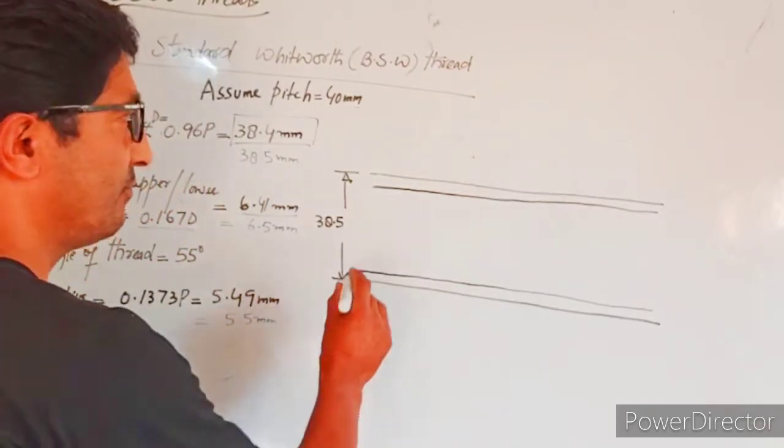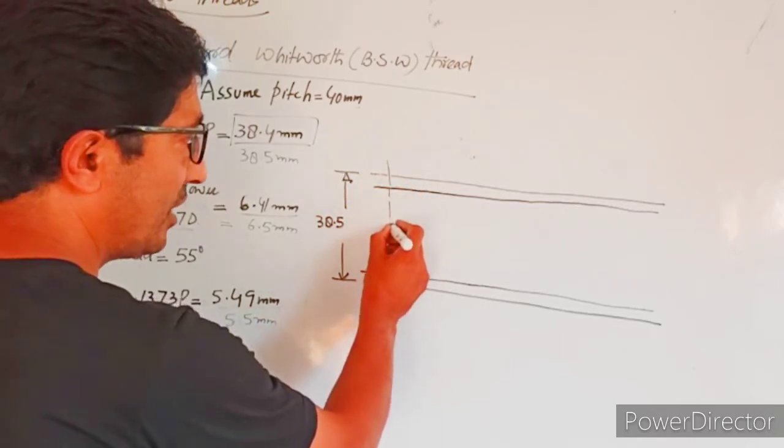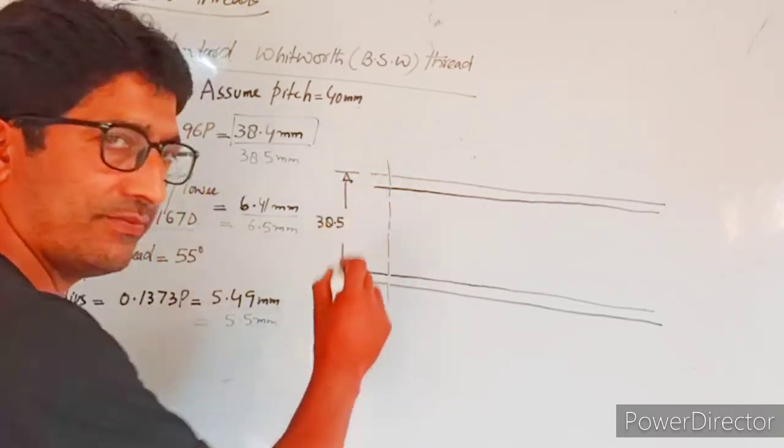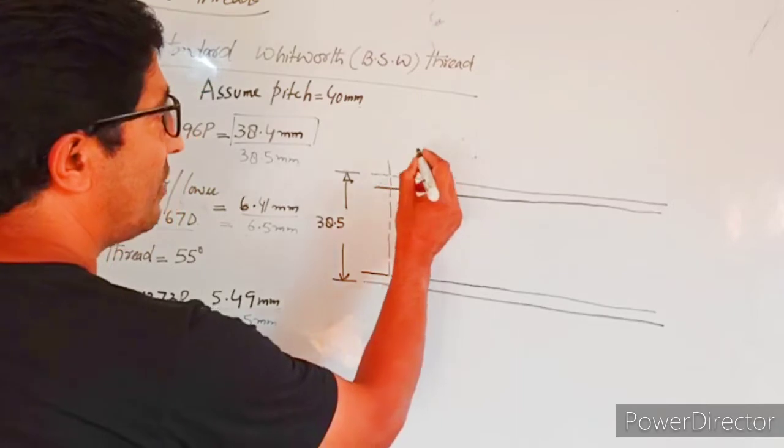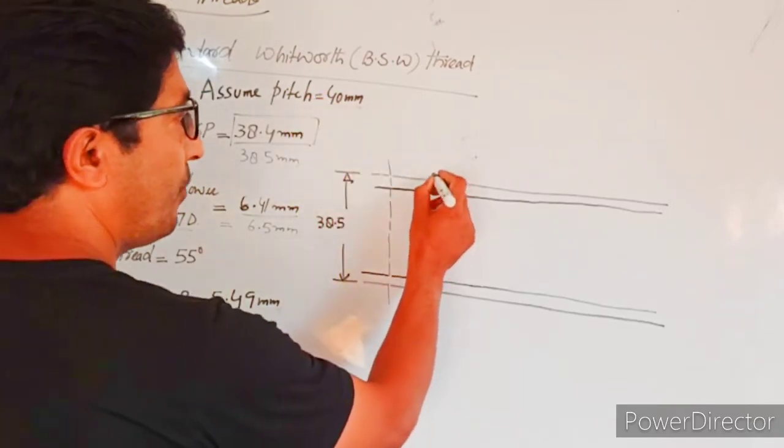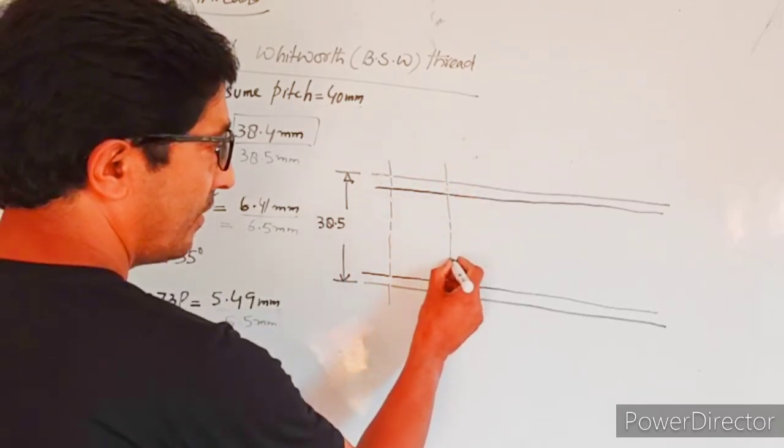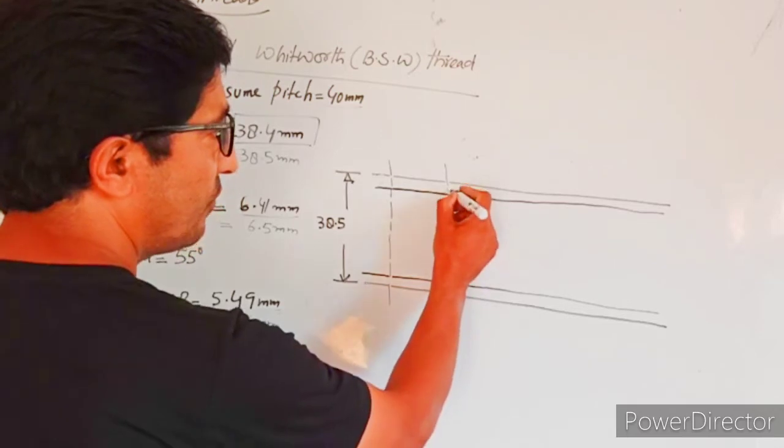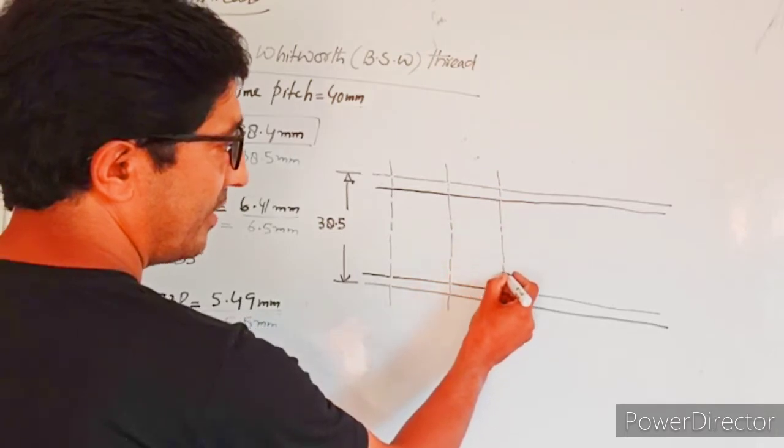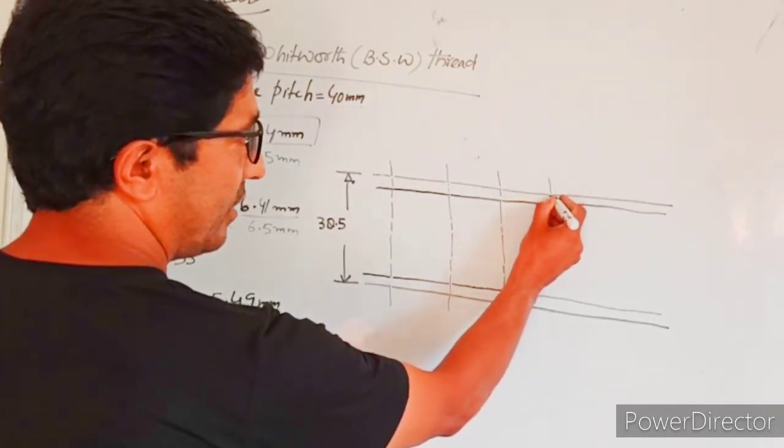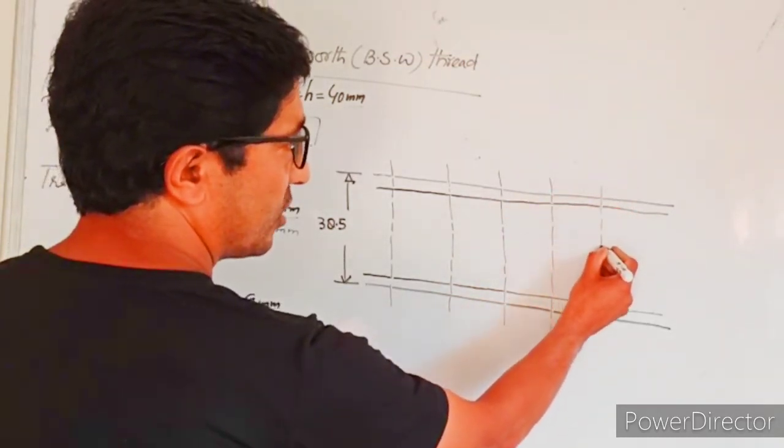At both points, you need to draw vertical lines, dotted lines. After that, from this vertical line, measure half of the pitch, that is 20mm. So at 20mm, draw a dotted line. Same from this point, again half of the pitch, draw a dotted line. Again dotted line, half of the pitch.